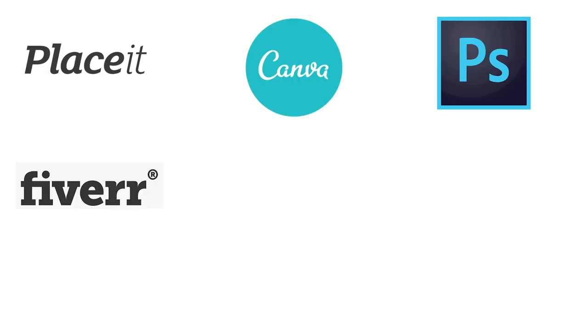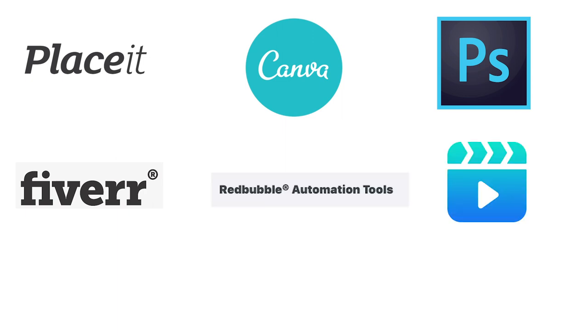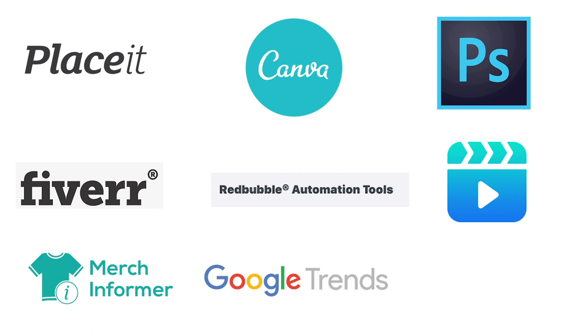The tools we're going to be covering today are Placeit, Canva, Photoshop, Fiverr — it's not really a tool, but still — Redbubble Tags, Creator Studio, Merch Informer, Google Trends, and Google Keyword Planner. This is quite a lot of tools, but don't worry — some of them are free. Fiverr is not really free at all, but it's a great platform that can be used as a very useful tool.